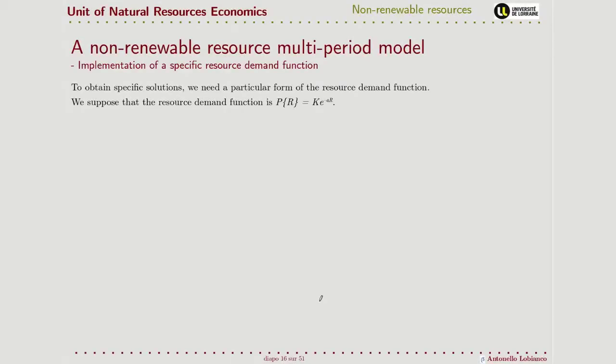Up to now we analyzed the problem in a general form of the demand function. Let's go in now to go a little bit more deep and specific, but in order to do that we need to make some assumptions on the specific form of the demand function. In particular, it's going to take this exponential form, so that the price depends on the quantity of the resources extracted and a couple of positive constants k and a.